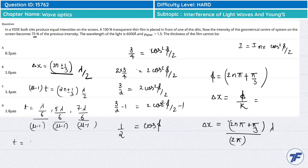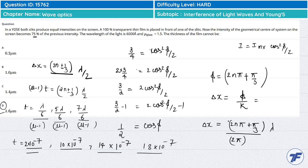So we see λ/6 becomes 1000, and in units 10⁻⁷. μ - 1 is 0.5, so this becomes 2 into 10⁻⁷. First value is 2 × 10⁻⁷, second is 10 × 10⁻⁷, third is 14 × 10⁻⁷, fourth is 18 × 10⁻⁷. These are 0.2 μm, 1.0 μm, 1.4 μm, 1.8 μm. But 1.6 is not coming, so option D cannot be the answer.